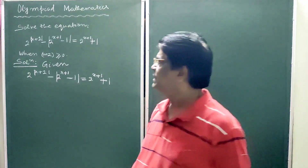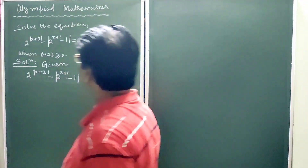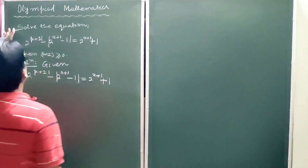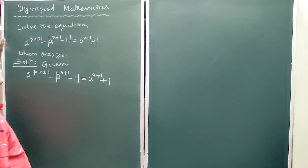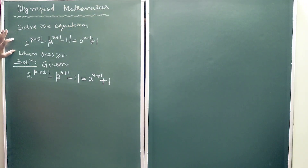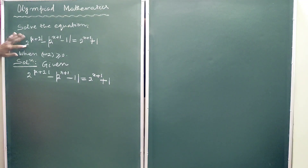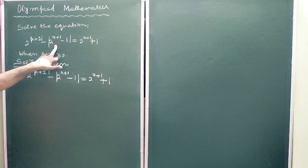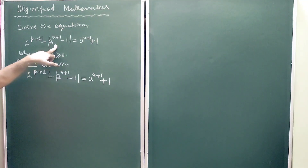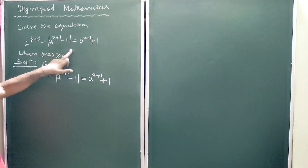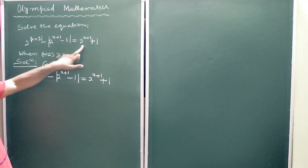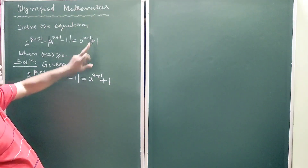Hello students, let us solve an equation. The equation is very important for your examination point of view. The question is: solve the equation 2 to the power absolute value of (x+2) minus absolute value of 2 to the power (x+1) minus 1, greater than or equal to 2 to the power (x+1) plus 1.